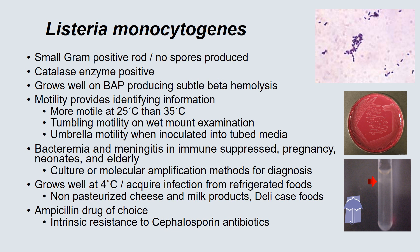Listeria loves to grow cold — it grows very well at 4 degrees and actually replicates, not just survives. Because of this, you can acquire infection from eating refrigerated foods, particularly non-pasteurized cheese, milk products, and delicatessen foods. Ampicillin is considered the drug of choice. This organism is intrinsically resistant to cephalosporin antibiotics, which is why it is so important to differentiate it from group B strep, for which cephalosporins are the primary drugs of choice.